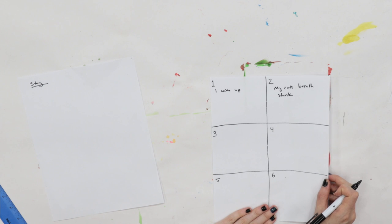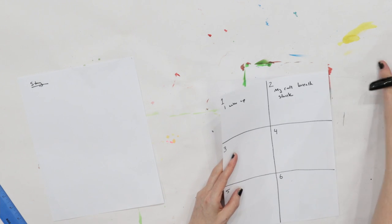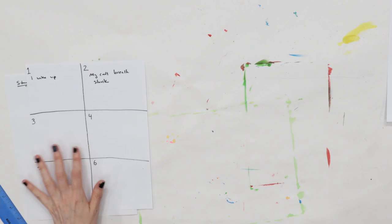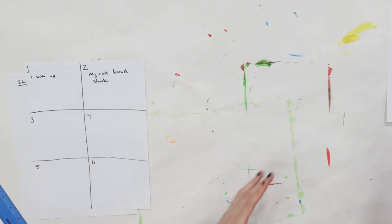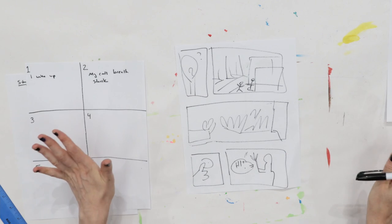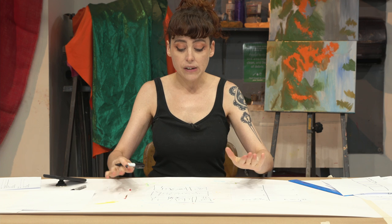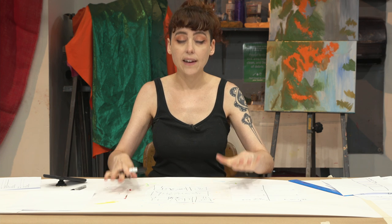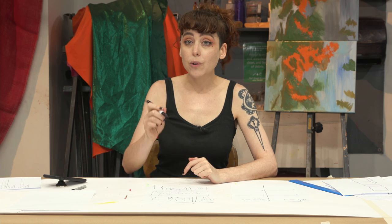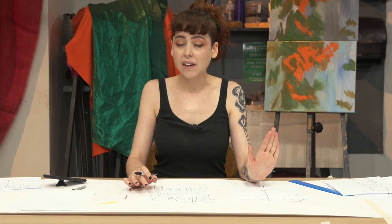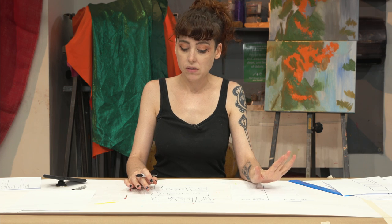After you've written your script, grab a fresh sheet of paper, because we're going to do a rough layout. Here's an example of a rough layout that I did. No straight lines, stick figures, scribbles — it looks like a mess. And I get paid to do this. Your rough layout should also look like a mess. It only has to make sense to you. Nobody else.